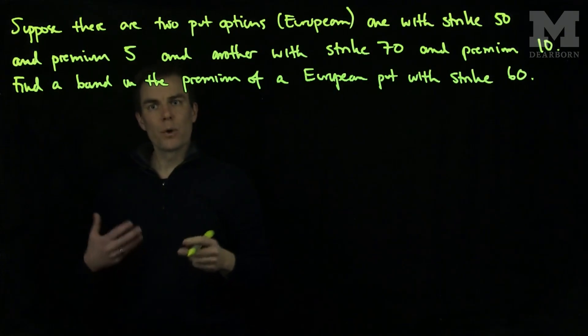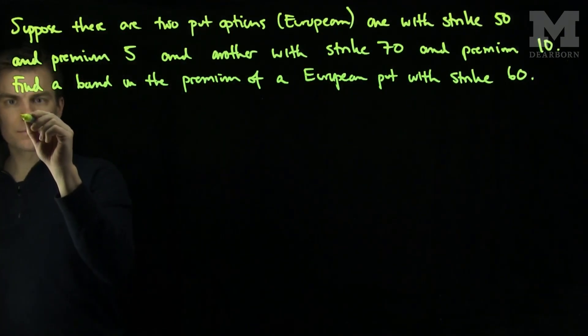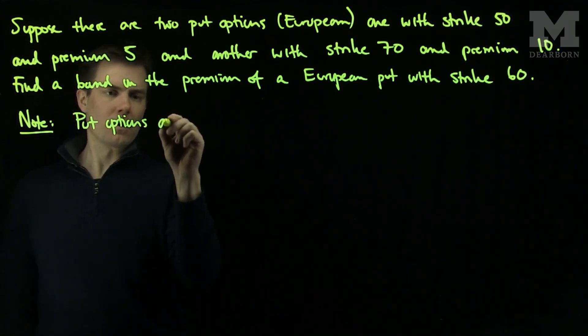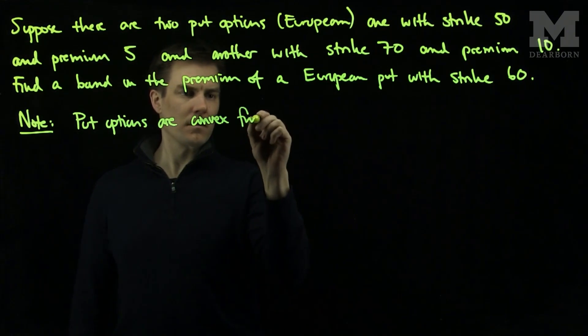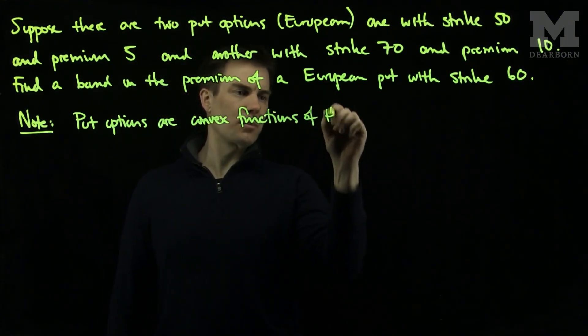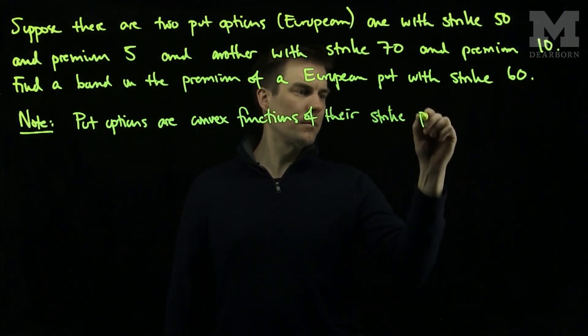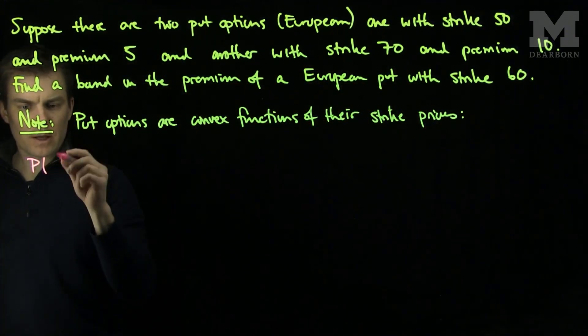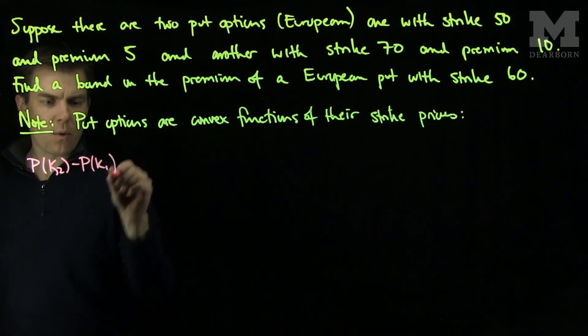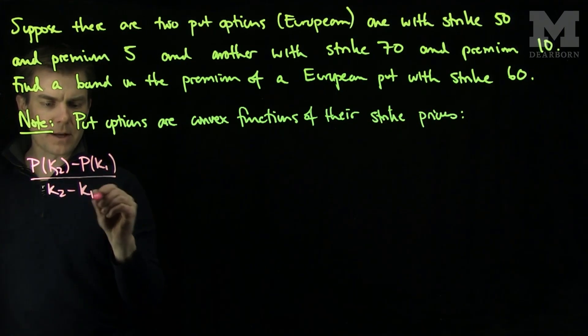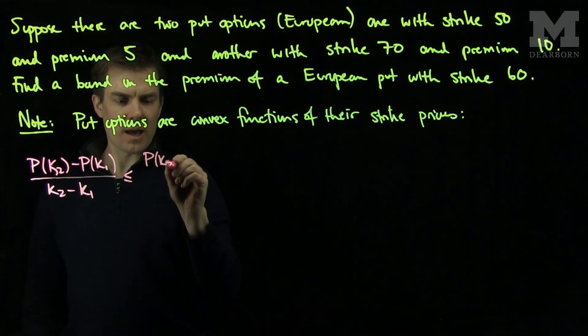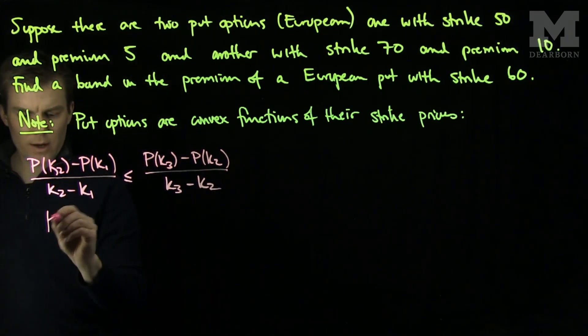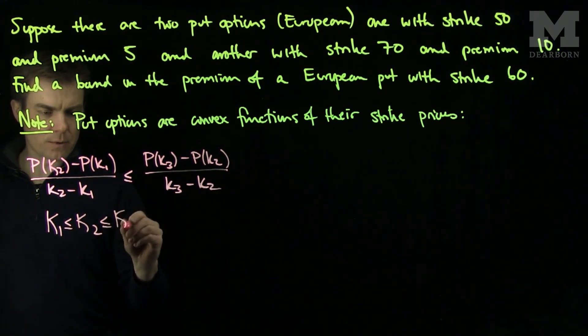To solve this problem, we'll use the following property of put options. Put options are convex functions of their strike prices. What this means mathematically is that if I look at P(k2) - P(k1) over k2 - k1, this is less than or equal to P(k3) - P(k2) over k3 - k2, where k1 ≤ k2 ≤ k3.